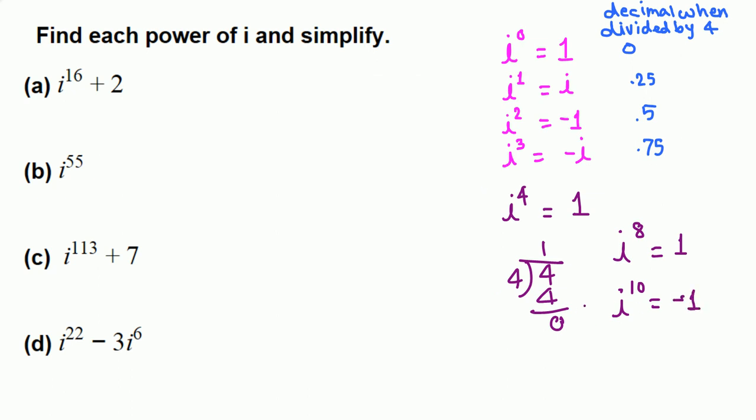We use these facts to calculate these values. In the first part, i raised to 16, divide 16 by 4. 4 divides 16 evenly, going in 4 times with no remainder. That corresponds to the first power, so 1. i raised to 16 will be 1, and we have plus 2, so 1 plus 2 equals 3.